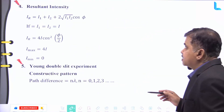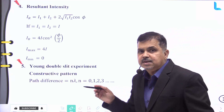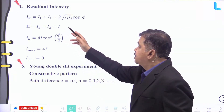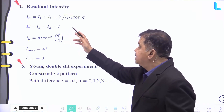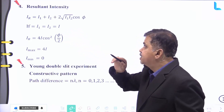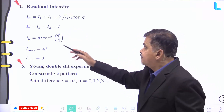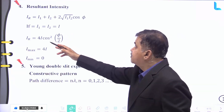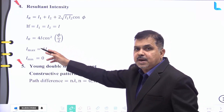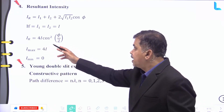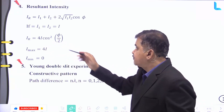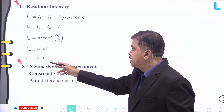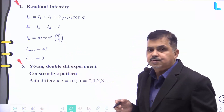The resultant intensity IR = I1 + I2 + 2√(I1·I2) cos φ. If I1 = I2 = I, then IR = 4I cos²(φ/2), with I_max = 4I and I_min = 0.